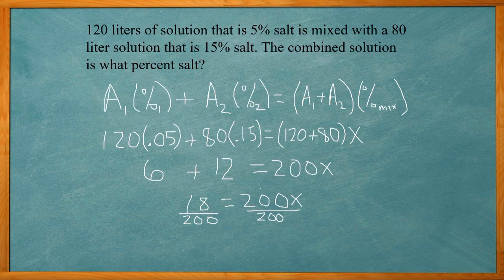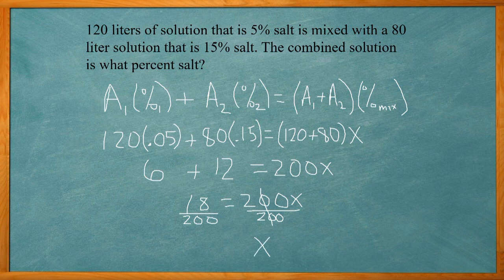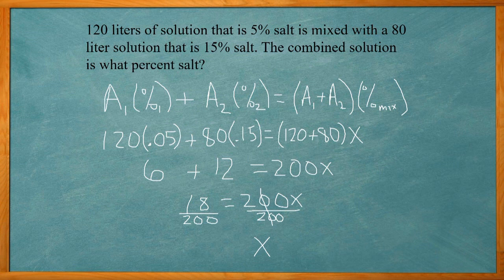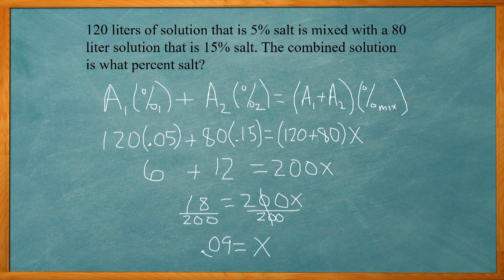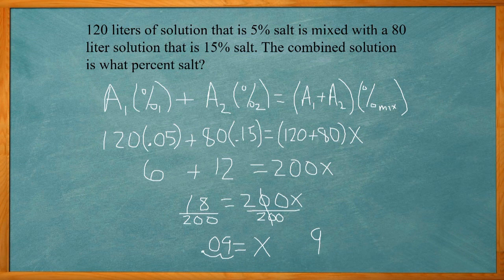That's basically going to cancel out the 200 here. 200 over 200 is 1. So 1x is just x. 18 divided by 200, you use a calculator or long division. But after you get that, you get 0.09. You're going to change that to percent. You need to move the decimal place two spots to give you 9%.